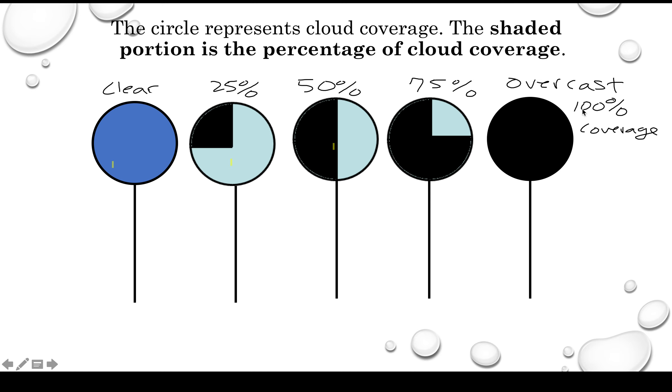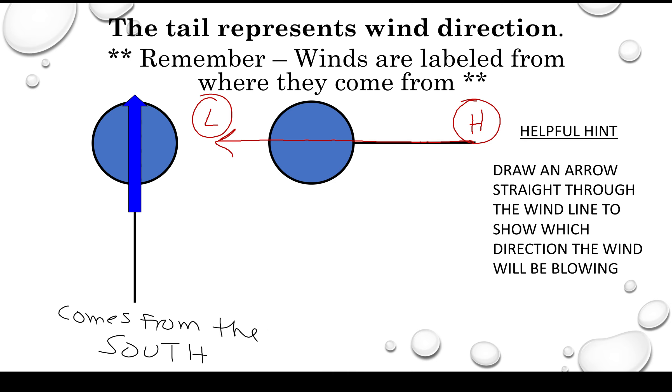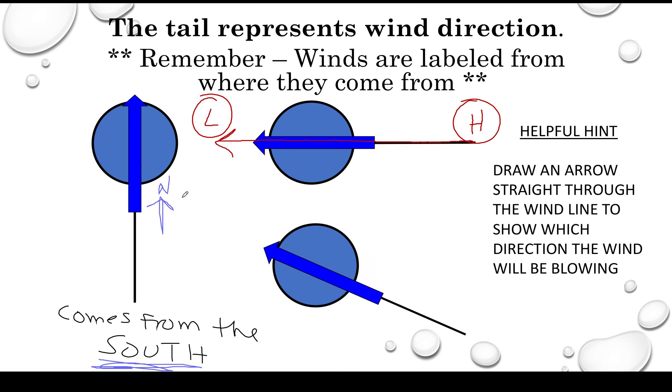So what I mean is 25 percent is one quarter, 50 is half, 75 is three quarters. Remember that winds go from high to low pressure, so it helps if you draw an arrow through the tail to represent the direction the wind is blowing towards. But remember, we don't label that wind in that direction; we always label it in the direction it's coming from. So in this case we would say it's a south wind, but it's blowing towards the north.